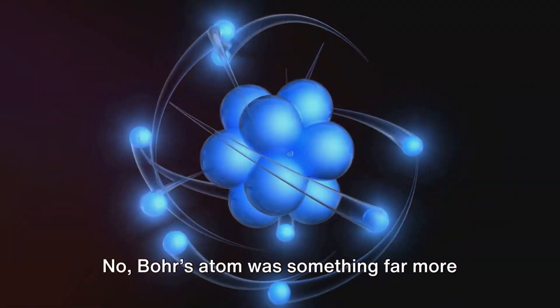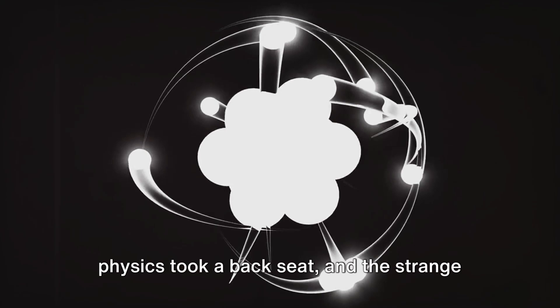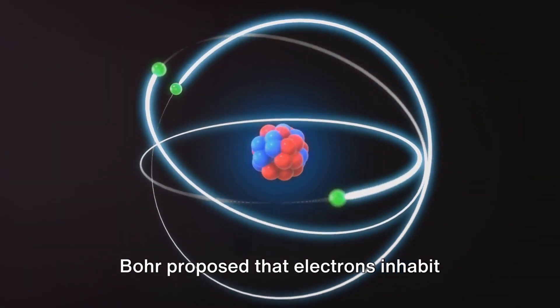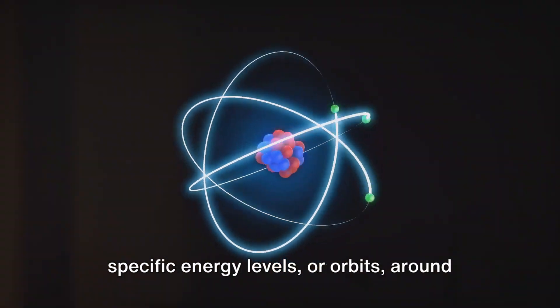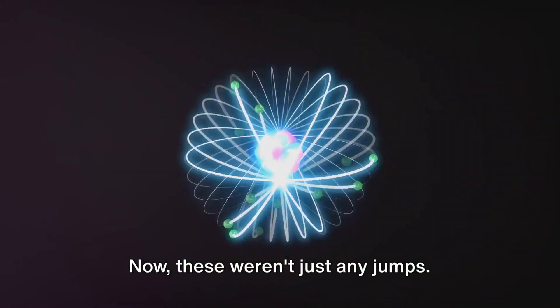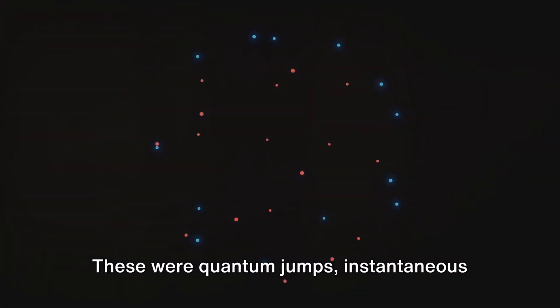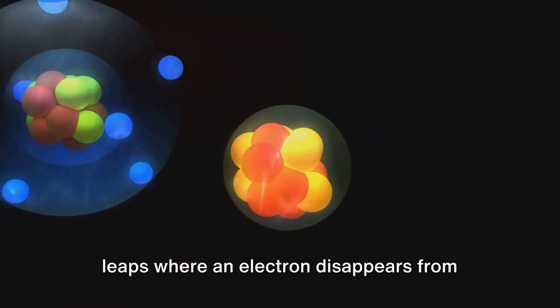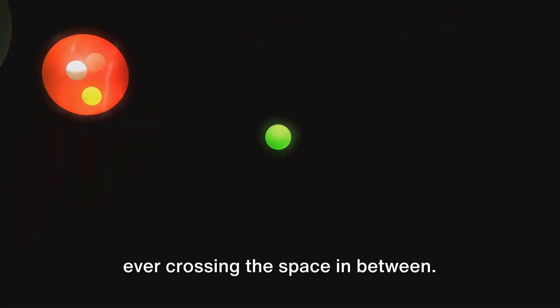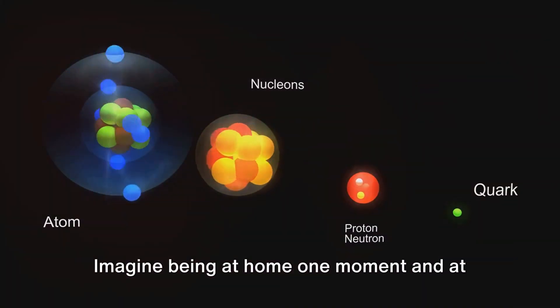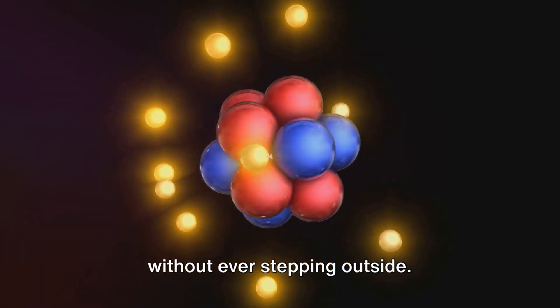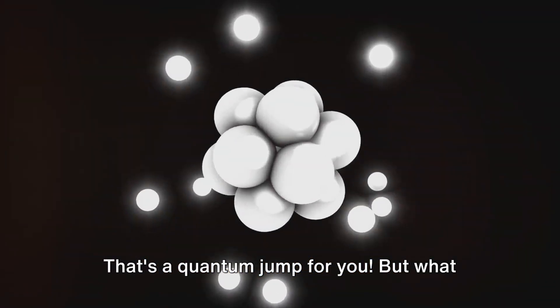A place where the ordinary laws of physics took a back seat and the strange rules of quantum mechanics took the wheel. Bohr proposed that electrons inhabit specific energy levels, or orbits, around the nucleus and that they could jump from one level to another. Now, these weren't just any jumps. These were quantum jumps. Instantaneous leaps where an electron disappears from one place and reappears in another without ever crossing the space in between. Imagine being at home one moment and at your favorite coffee shop the next without ever stepping outside. That's a quantum jump for you.